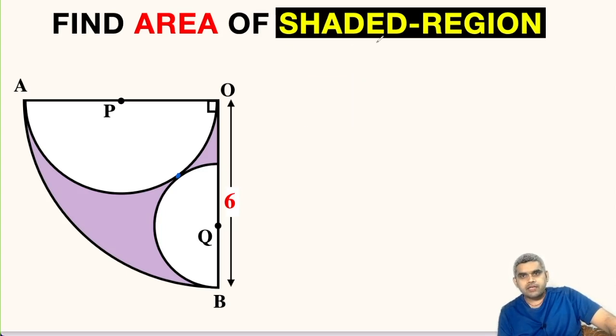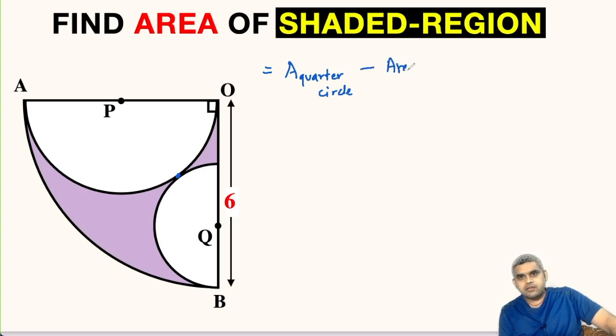Area of this shaded region will be equal to the area of quarter circle minus area of this big semicircle minus area of this small semicircle.